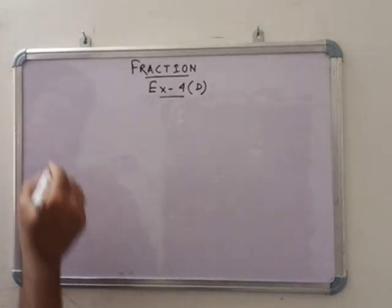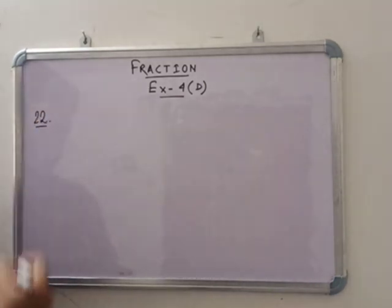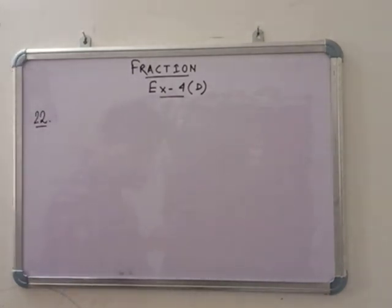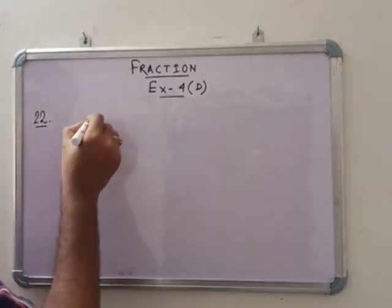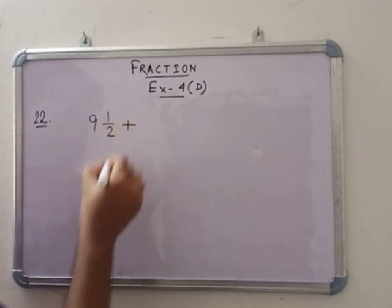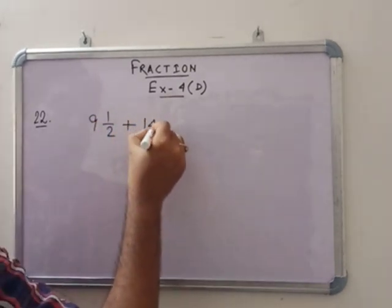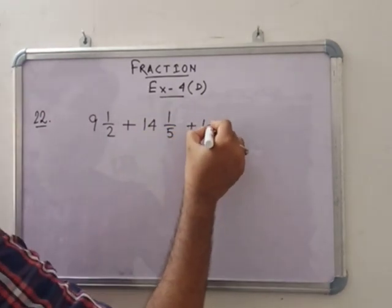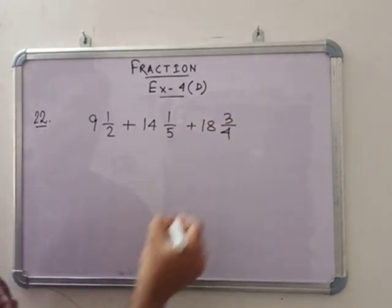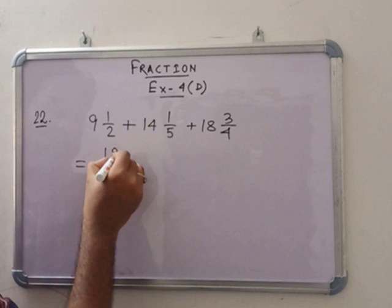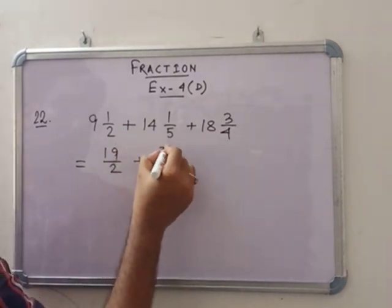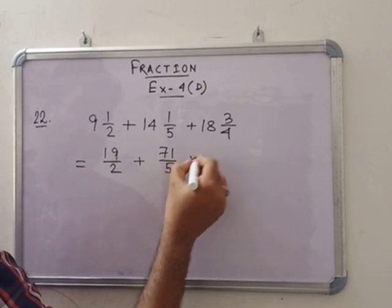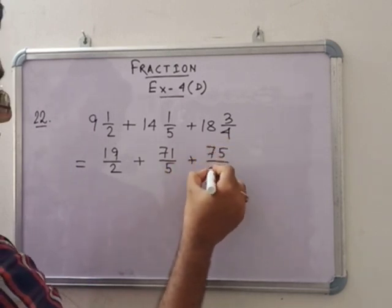In number 22, see that: the weight is given, 3 weights are given respectively. A porter carries all 3 boxes. What is the total weight carried by the porter? Now we have to add these 3. So 9 and 1 by 2 plus 14 and 1 by 5 plus 18 and 3 by 4. So now this is 19 by 2 plus 71 by 5 plus 75 by 4.